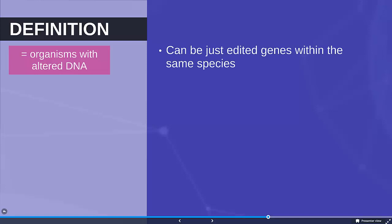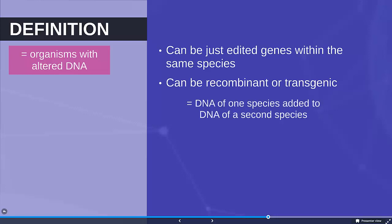So it can be that you just edit genes within the same species. So you're changing from one allele to another but something that's all in the same species. If we say DNA is recombinant or a species is transgenic what we mean is we've taken the DNA from one species and added it to another species. This could be just one gene it could be multiple genes.